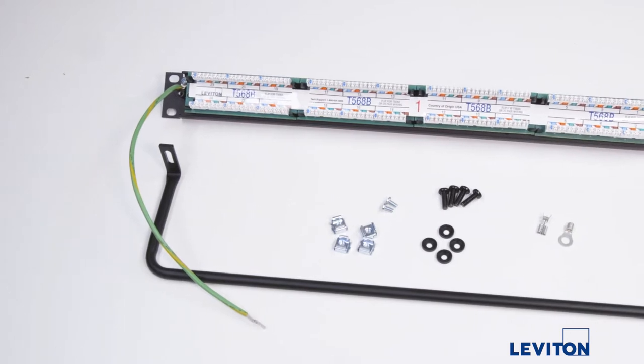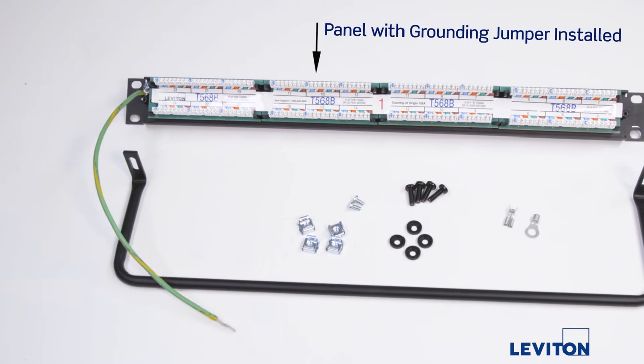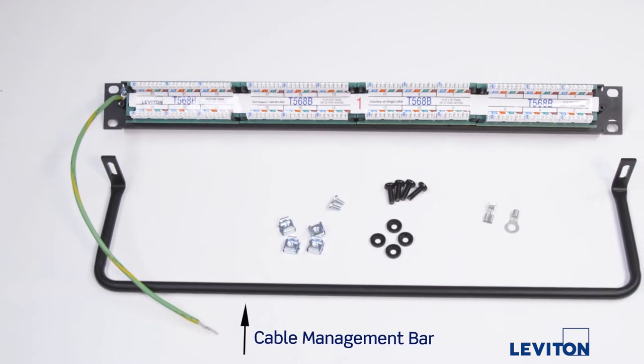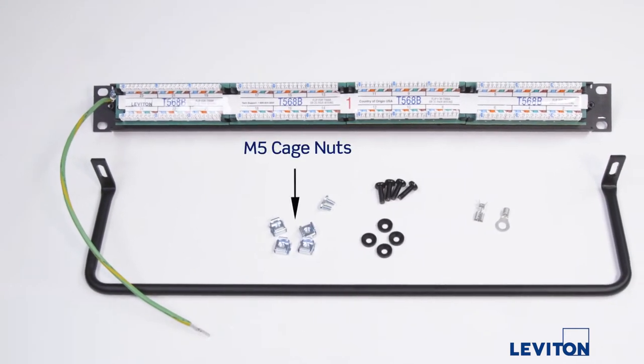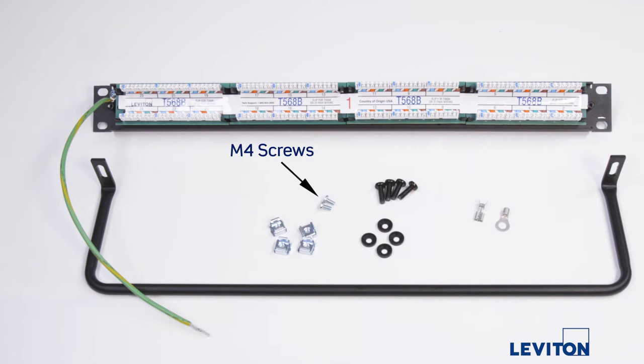The patch panel comes with the following components: the panel with the grounding jumper installed, the cable management bar, M5 cage nuts, M5 rack mount screws and cup washers, M4 screws for mounting the cable management bar, and a spade lug and a ring terminal.